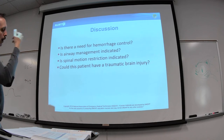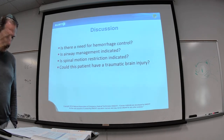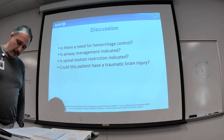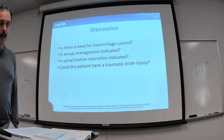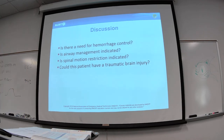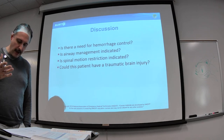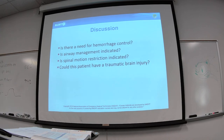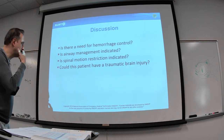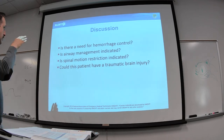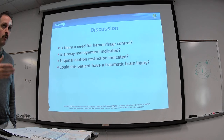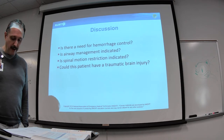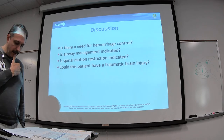For airway management: SpO2 is 92%, so the patient needs supplemental oxygen. We want SpO2 between 94 and 99 percent. Start with low-flow oxygen via nasal cannula, titrated to maintain 94-99%. For spinal motion restriction, we apply a c-collar — not too tight — to properly immobilize the patient, since he hit his head, has a GCS of 13, and may have a potential head injury.